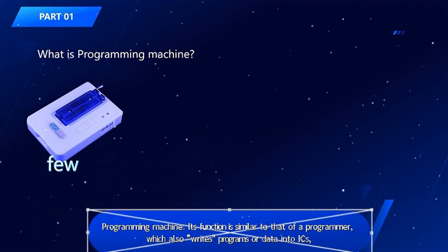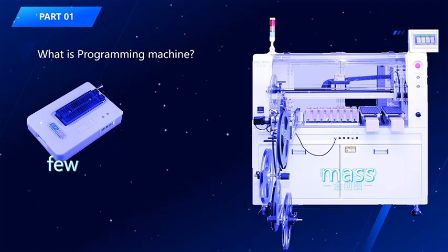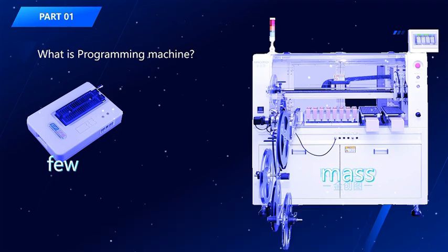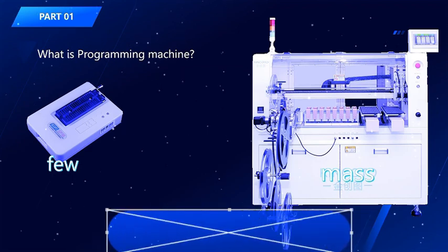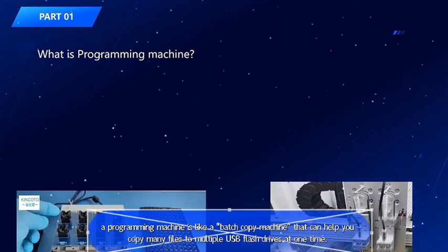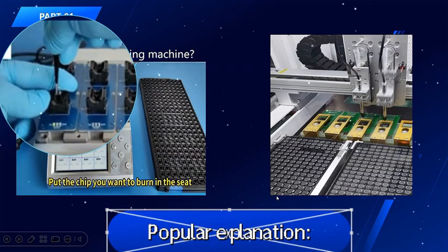A programming machine's function is similar to that of a programmer, which also writes programs or data into ICs, but it can operate on many ICs at the same time. Just like a programmer is a single-copy machine, a programming machine is like a batch copy machine that can help you copy many files to multiple USB flash drives at one time.